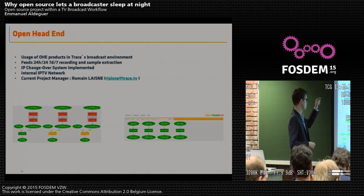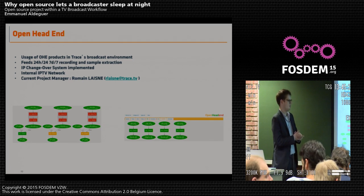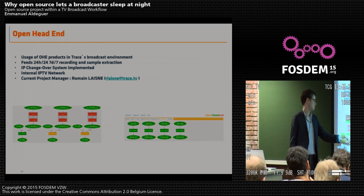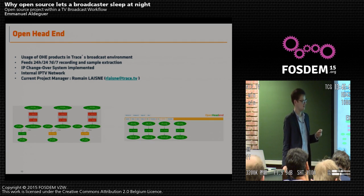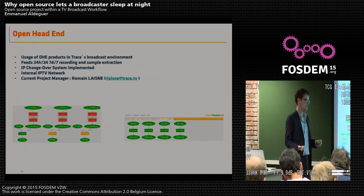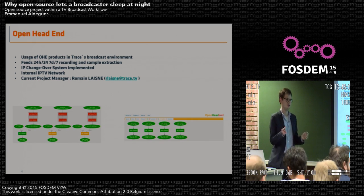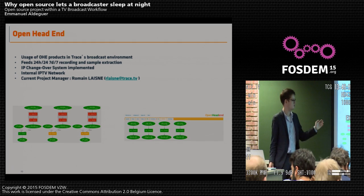We just implemented an IP changeover system — still another open-and-end solution — which Romain is working on. What is very convenient is that we can switch from the main feed IP stream to a local file played locally on the server. The switch is very smooth and we are really happy with it. What is also convenient is that the local file can be directly extracted from the previous application. Back in the day, we always had to ask the production team to record what happened a couple of days ago, then convert it and insert it into the system. Now we just extract the file from open-and-end, and it always looks quite recent when we switch toward it.